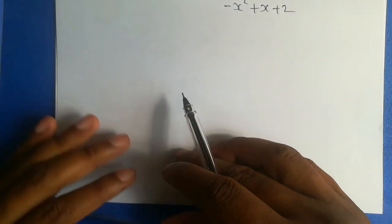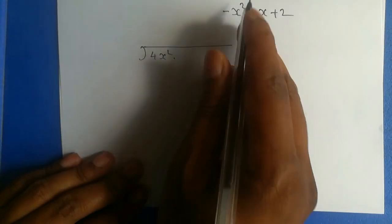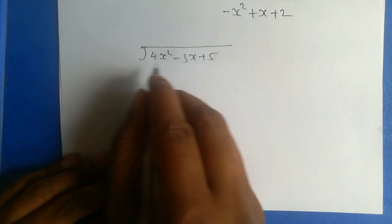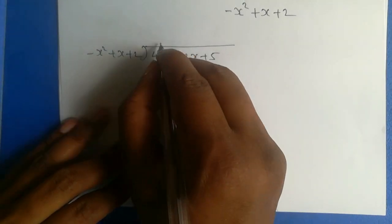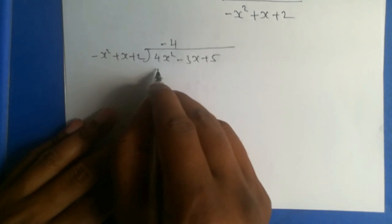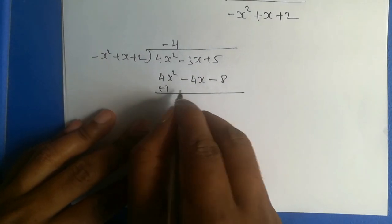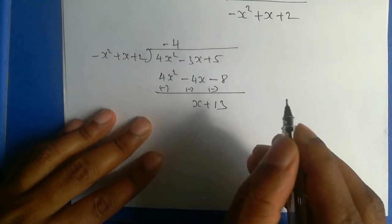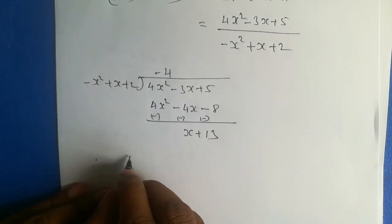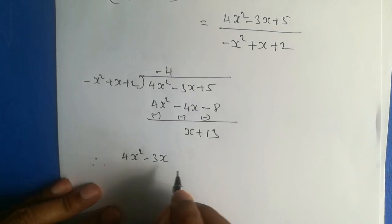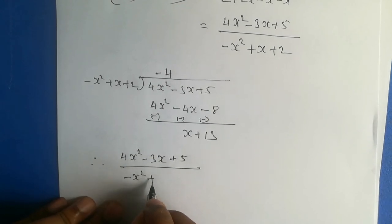This is an improper fraction: 4x squared minus 3x plus 5 divided by minus x squared plus x plus 2. So we will divide this. To get the same term, multiply by minus 4, giving 4x squared minus 4x minus 8. Multiply throughout, giving x plus 13. So 4x squared minus 3x plus 5 divided by minus x squared plus x plus 2 equals minus 4 plus x plus 13 over minus x squared plus x plus 2.